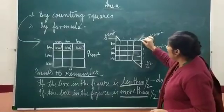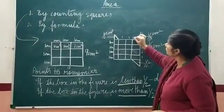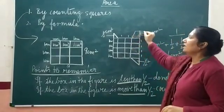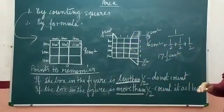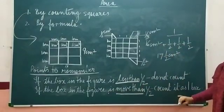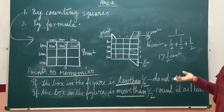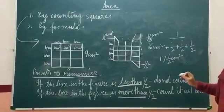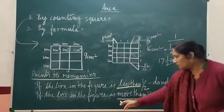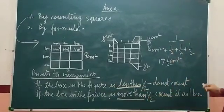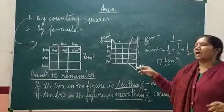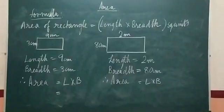And if the box is more than half — had it been complete it would be one whole box — so if the box in the figure is more than half, we count it as one centimeter square. To summarize: if less than half, do not count; if more than half, count it as one box; and if the box is exactly half, add up the halves.